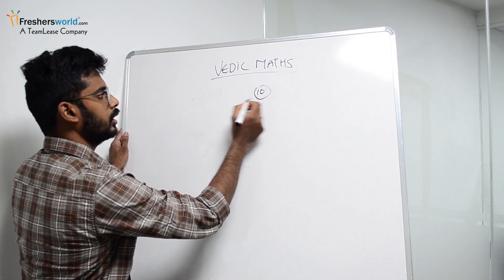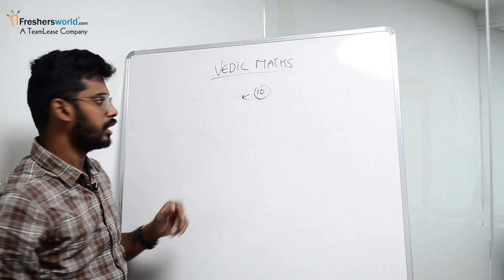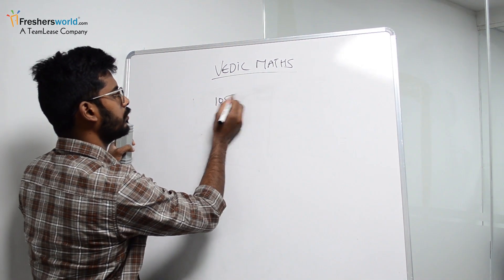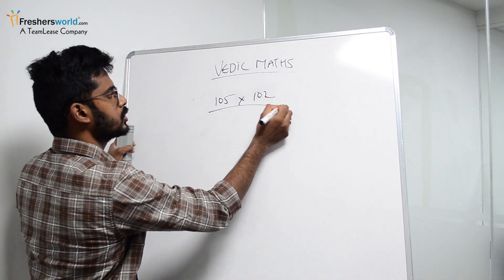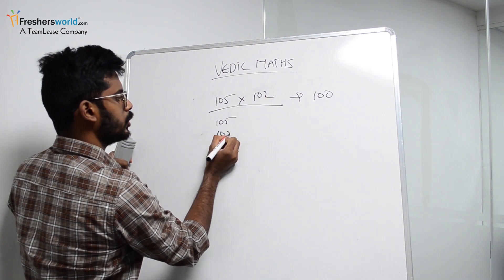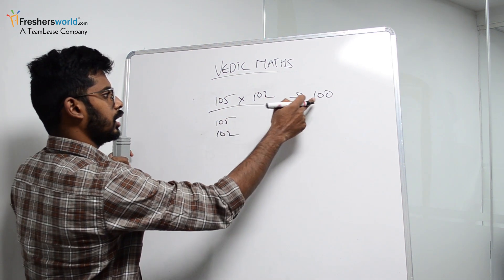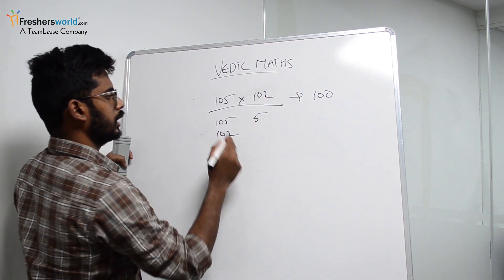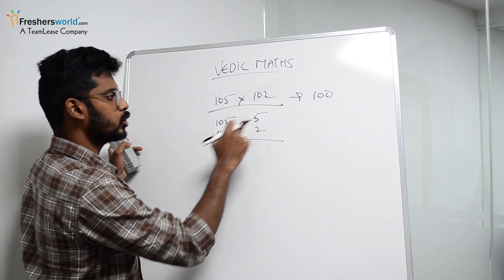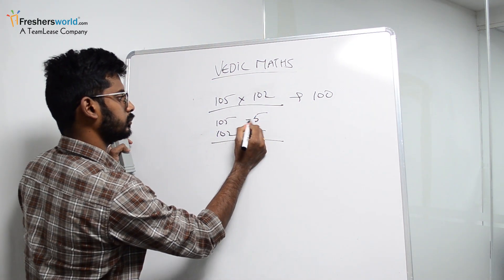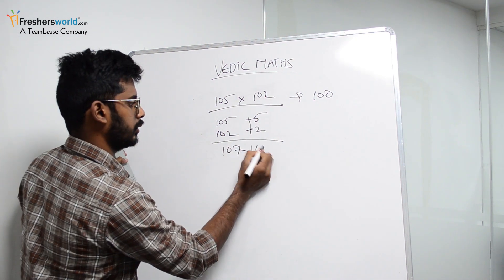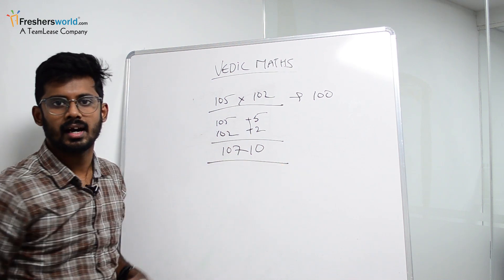The same method works when taking base as 100 for numbers closer to 100. For example, 105 into 102 — take base as 100. Write 105 and 102, find how much closer to 100: that is 5 and 2. So 105 plus 2 or 102 plus 5 gives 107. Then 5 into 2 is 10. So the answer is 10710.